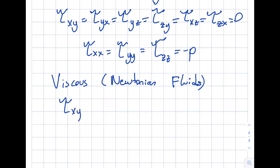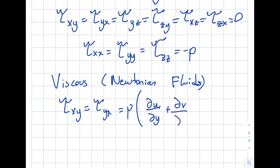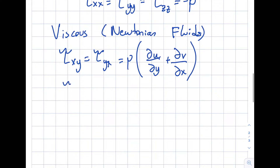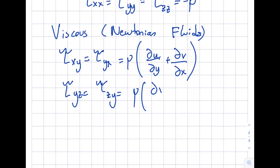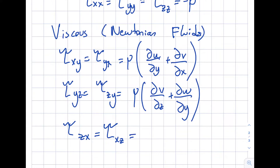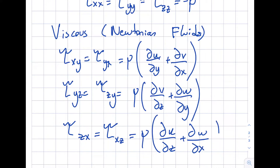For a Newtonian viscous fluid, τxy = τyx = μ(∂u/∂y + ∂v/∂x). Similarly, τyz = τzy = μ(∂v/∂z + ∂w/∂y), and τxz = τzx = μ(∂u/∂z + ∂w/∂x). Notice the stress tensor is symmetric, which is one good thing working in our favor. This accounts for six of the nine stress tensor components.